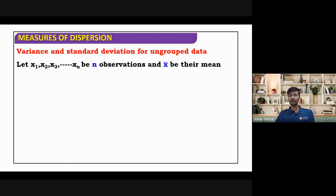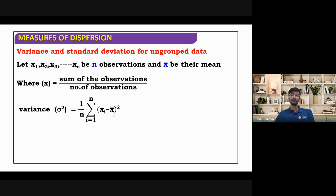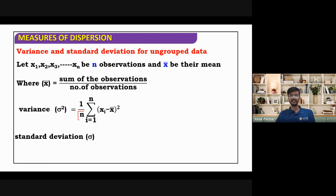For ungrouped data, let X1, X2, X3 be the n observations and X-bar be their mean. We have to find their deviations from the mean — that means find X1 minus X-bar, X2 minus X-bar and so on. X-bar is the mean, which is the sum of all observations divided by the total number of observations. For variance, we find the deviations, square them, add all of them, and divide by n. Standard deviation is just the root of variance.